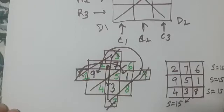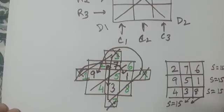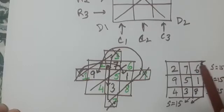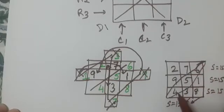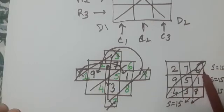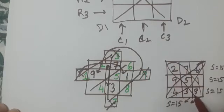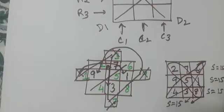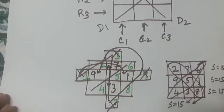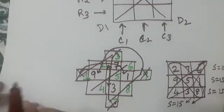Six plus one plus eight gives a sum of fifteen. Now add the numbers in the other diagonal: four plus five plus six is also fifteen. Similarly, two plus five plus eight gives a sum of fifteen. So this is the basic method of making a three by three magic square when you are given nine consecutive numbers.